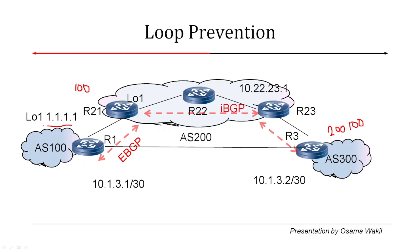AS300 is going to advertise the same prefix back to AS100, but the AS path will look like 100, 200, and then 300 — because 300 is the AS number of R3. Once R1 receives this advertisement, it will see its own AS number in the AS path and will discard it — it will not accept it. Let's bring up the routers in our lab topology so we can see this working.